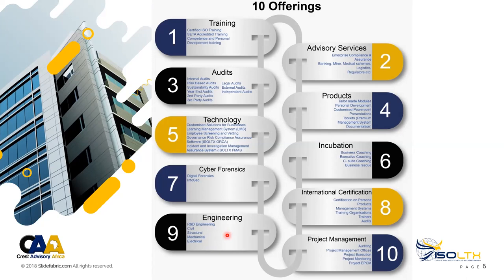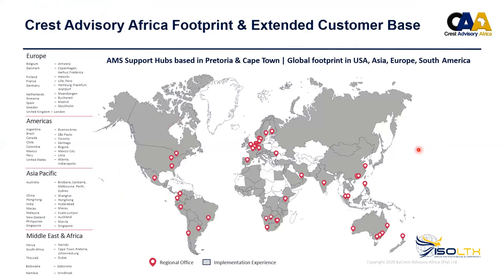Our extended footprint: we have been fortunate in merging with an international company that has a footprint in 32 countries globally. Together with our footprint in South Africa, Botswana, Namibia, and Mauritius, we have an extended footprint of over 34 countries. All the dots on the map represent our regional offices that we have access to.